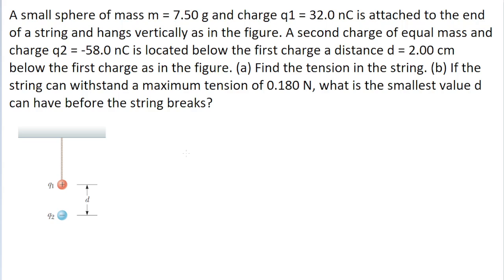Part A of the problem is asking us to find the tension in the string. Because there are a few different forces acting on the sphere, let's draw a free body diagram and work out the different forces on the sphere. This will be our free body diagram for sphere one. First off, there's going to be the force due to tension from the string, which is directed upwards. This is going to be T.